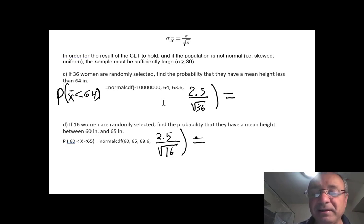Your standard deviation is not the same as the standard deviation of the original population. Because you are working with sample means now. They have a much smaller standard deviation. Your standard deviation is sigma divided by square root of n, which is 2.5 divided by square root of 36. And let's see what the answer is.